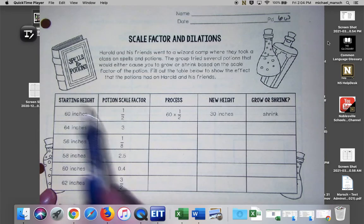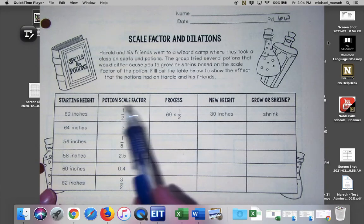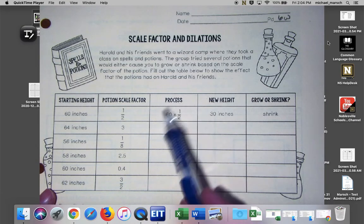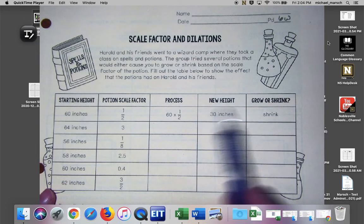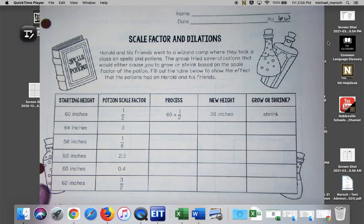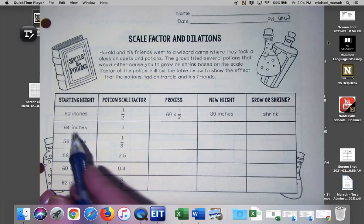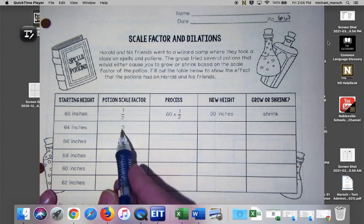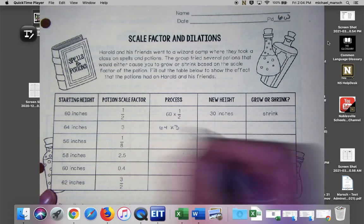They gave us the example that if one of Harold's friends started out at 60 inches tall and the potion had the scale factor of one half, they multiplied 60 times one half. Now the person is 30 inches so clearly they shrunk. We're going to do that same procedure, noticing that we are multiplying by the scale factor. If someone is 64 inches tall, the potion says three, 64 times three, we're going to get...